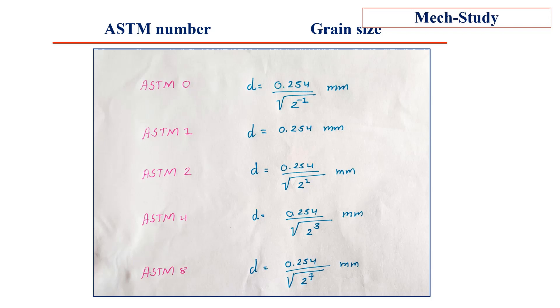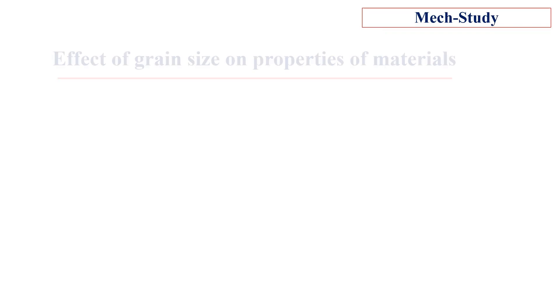For example, ASTM grain size number 1 has a grain size d equal to 0.254 millimeters. Similarly, we can count different grain size numbers from the table.